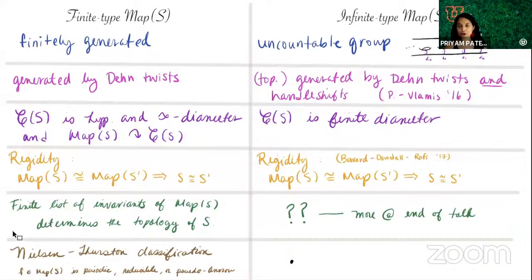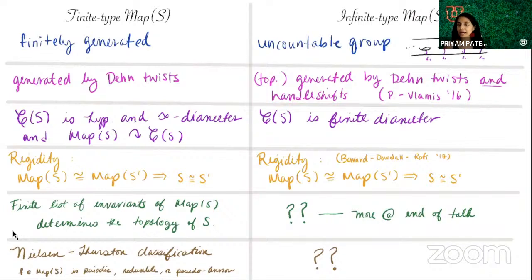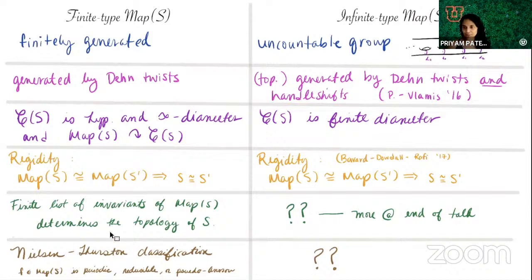A classification for infinite type mapping class groups will be more complicated — there won't be just three nice categories. It might be easier for some surfaces than others, and there are avenues toward it. That's not what I'm going to talk about today, though in another talk I might discuss some of my work related to that classification theorem. I'm running a little low on time, so I'll tell you about a theorem shortly. Does anyone have quick questions about this comparison slide?